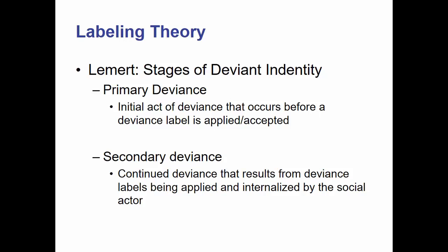If someone is caught and labeled as deviant after that primary deviance, it can lead to secondary deviance. Secondary deviance is continued deviance that results from deviant labels being applied and internalized by the social actor. After somebody starts to think of themselves as a bad kid, or starts to think shoplifting isn't that bad, the shoplifting they do after that point, or the fights that kid gets in after he continues to think of himself as a bad kid — that is called secondary deviance.